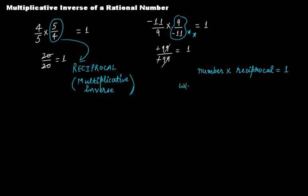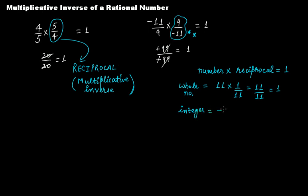In the case of whole numbers, if I take a whole number — we have discussed whole numbers and integers in our previous videos — if your whole number is 11, its reciprocal will be 1 over 11. If you multiply this you get 11 over 11, which equals 1. For a negative integer, say minus 300, the reciprocal will be 1 over minus 300. If you solve it you get minus 300 divided by minus 300, which equals 1. So a number multiplied with its reciprocal will always be 1.